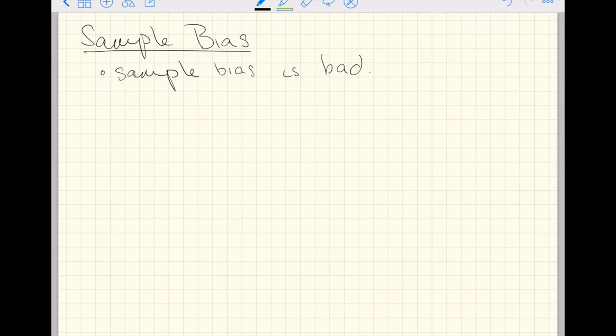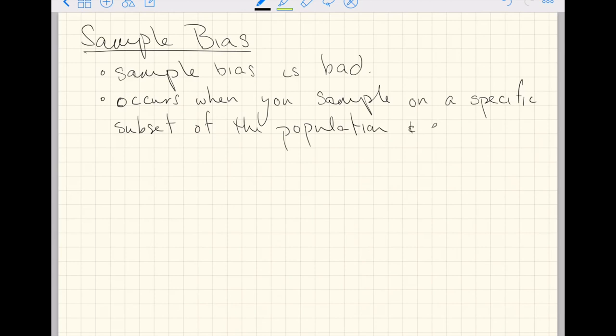The next topic is sample bias. Let's just keep it simple right off the bat. Sample bias is bad. Sample bias occurs when you select, let's say, sample only a specific subset of the population and exclude, intentionally or not, other subsets of the population.